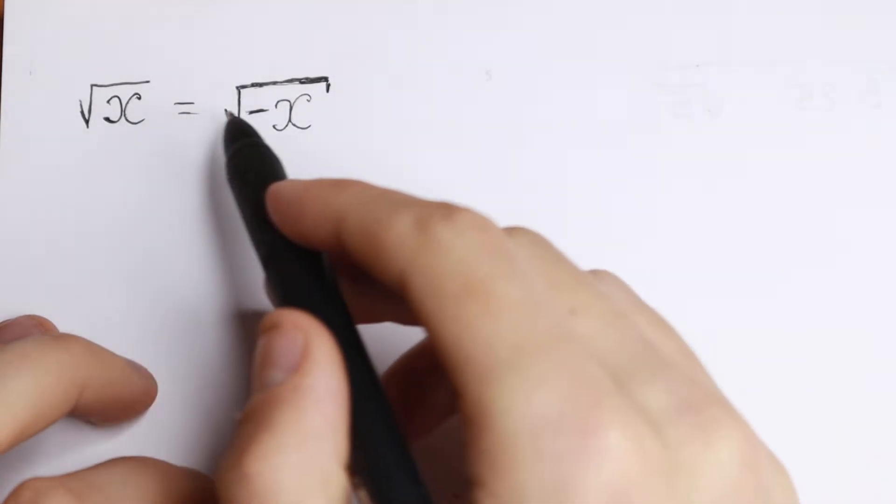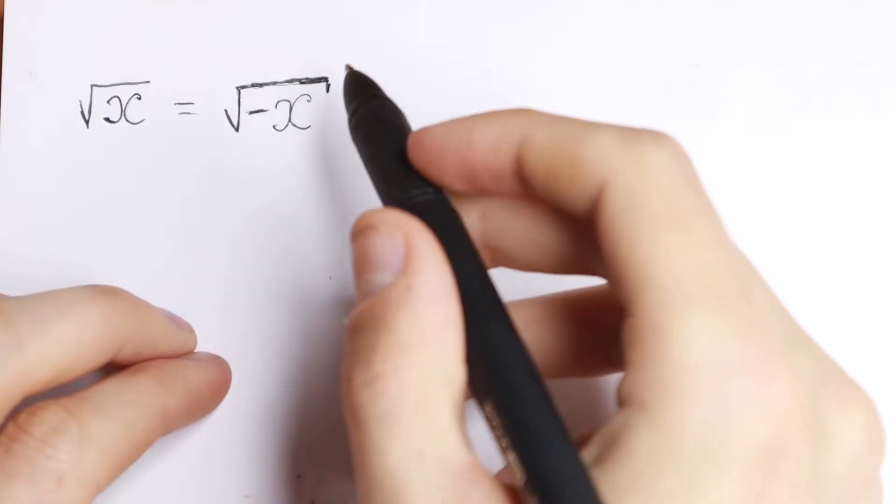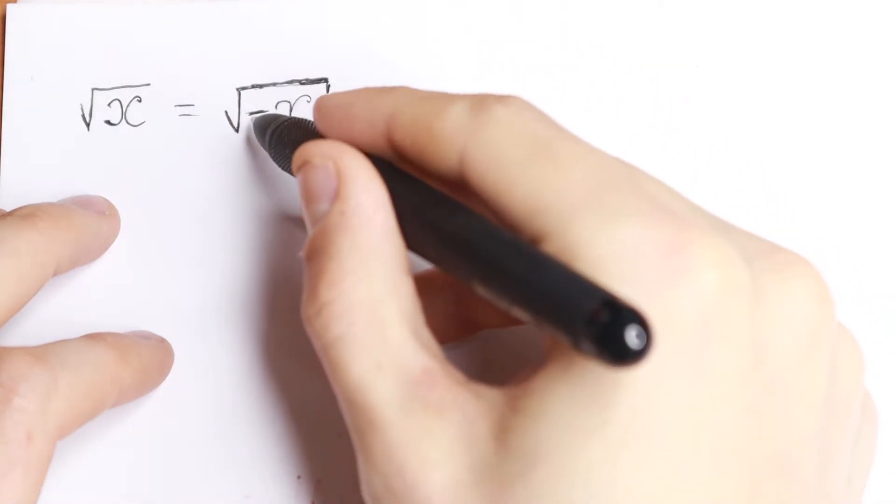Today we have an interesting equation: square root of x equals square root of minus x. At first sight, this equation seems to have no roots, because here x is positive, and here we have minus x.